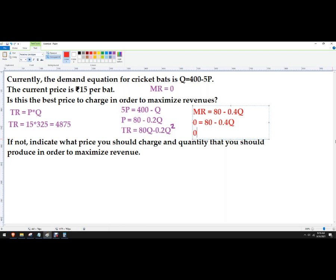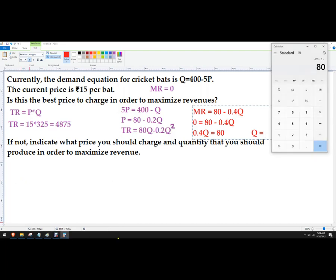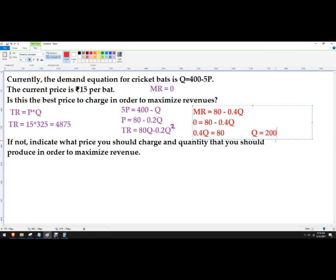It's going to give me a quantity. 0.4Q equals 80. And then I ran out of room, so I'll put this over here. Q equals 80 divided by 0.4, which is 200. So the revenue maximizing quantity is 200.